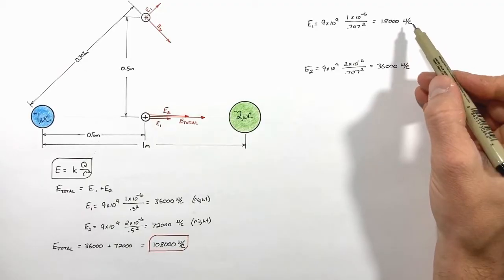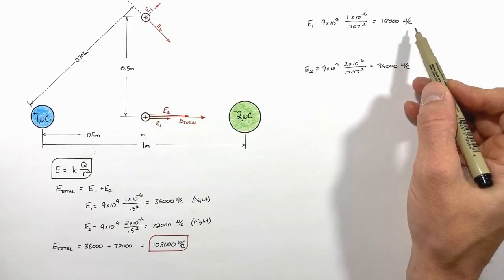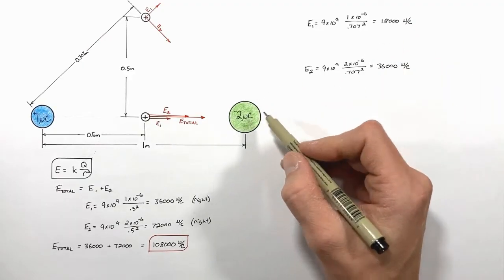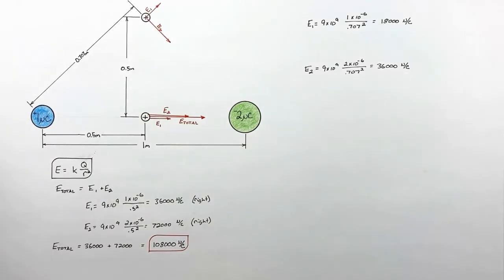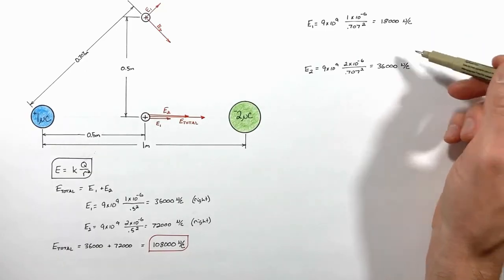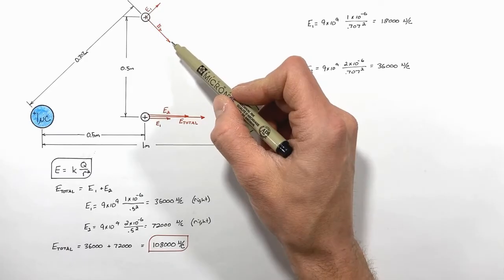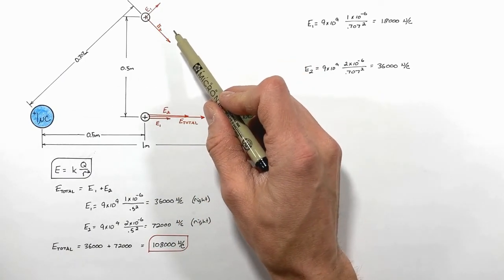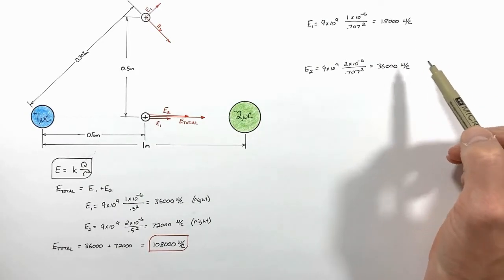We find the electric field from the one micro coulomb charge is 18,000 newtons per coulomb, and the magnitude of the electric field from the two micro coulomb charge is 36,000 newtons per coulomb. It's tempting to simply add these two magnitudes, but remember we're dealing with vector addition — one vector is up and to the right and the other is down and to the right. So we need to break these vectors into their components along each axis and then add them together.